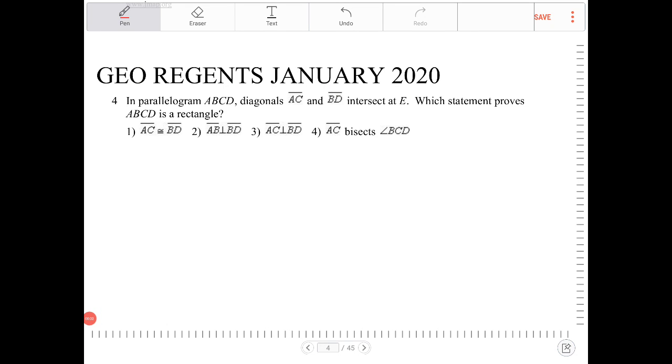In parallelogram ABCD, diagonals AC and BD intersect at point E. Which statement proves ABCD is a rectangle?